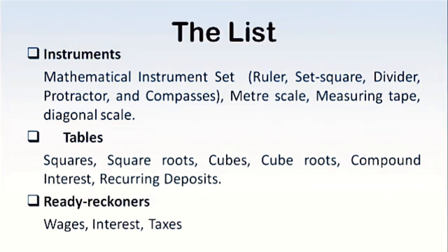Now, what material can we have in a mathematics resource room? The list is very long. Number one is instruments — the mathematical instrument set — including ruler, set square, divider, protractor, and compasses. We can also have a meter scale, measuring tape, and diagonal scale.